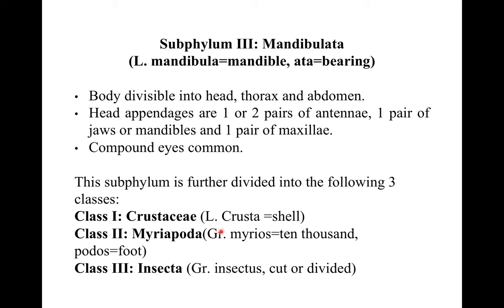Subphylum 3 Mandibulata: they are mandible-bearing arthropods. The body is divided into head, thorax, and abdomen. Head appendages are one or two pairs of antennae, one pair of jaws or mandibles, and one pair of maxillae. Compound eyes are common. This subphylum is divided into three classes: Crustacea, Myriapoda, and Insecta.